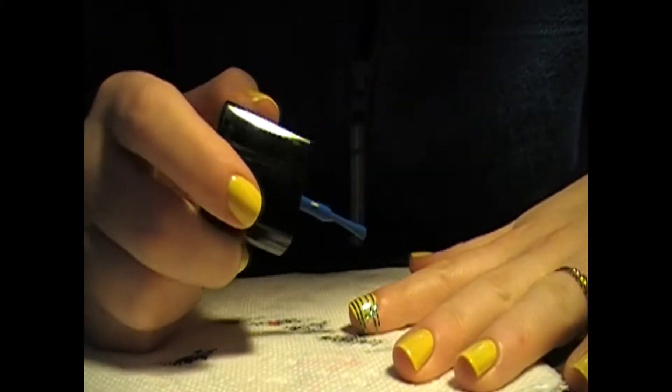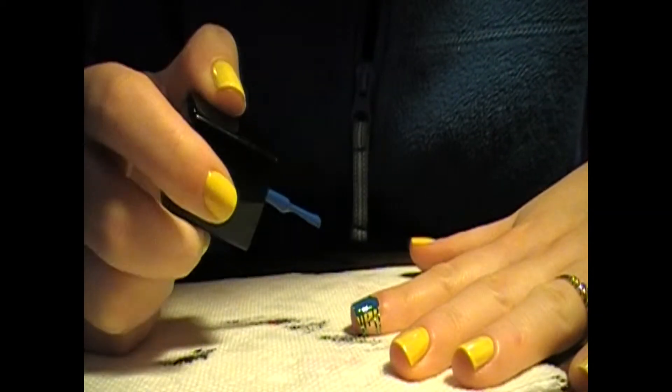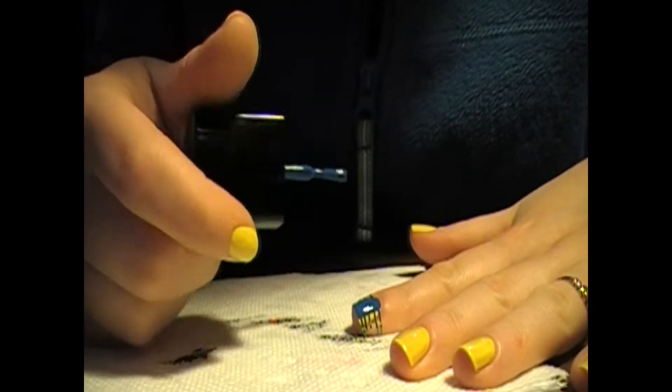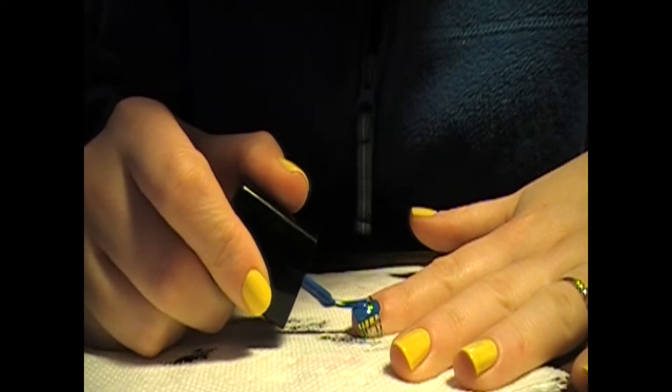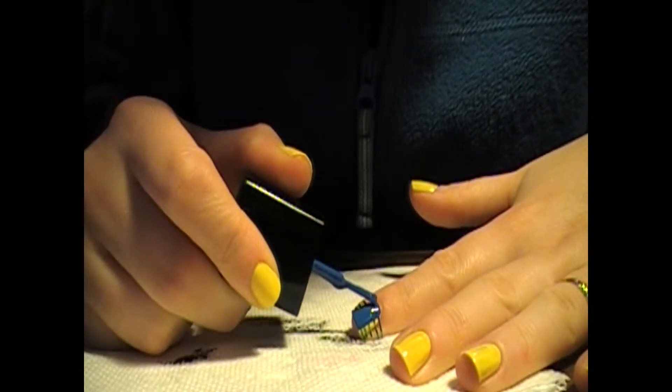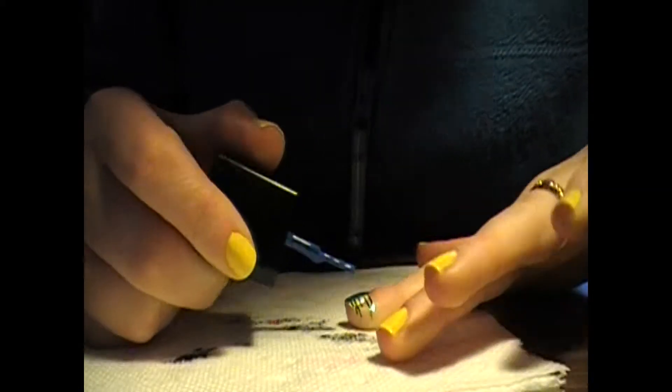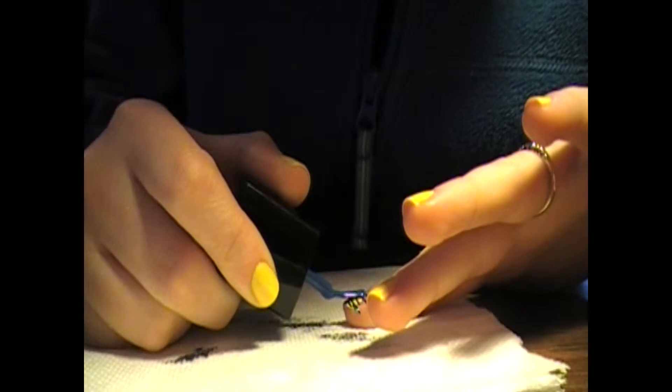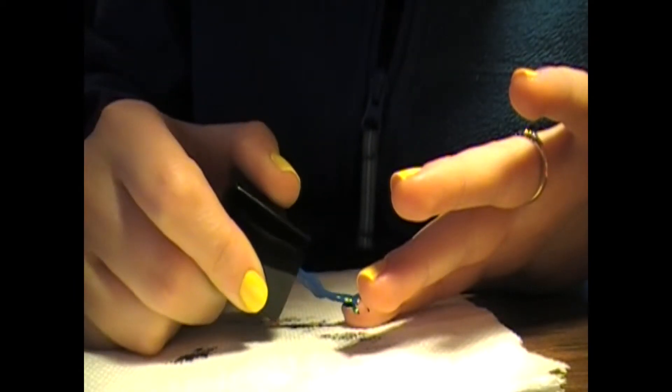So I'm just going to paint that on over top of the tape and my base color, obviously. I'm going to try to get right on the edges so you can't see the yellow. You can always clean up the edges with acetone or nail polish remover. So it's okay if you get a little on your skin.